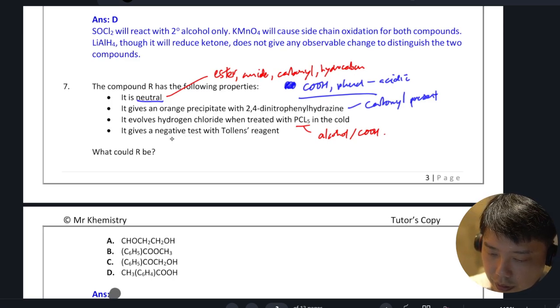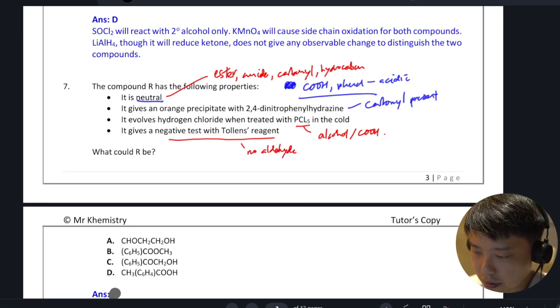It gives a negative test with Tollens, which probably means that there is no aldehyde. So when you see that positive 2,4-DNPH but negative Tollens, this simply means that there is a ketone present.